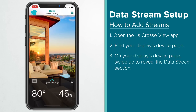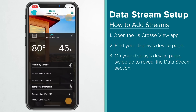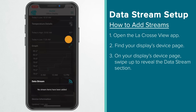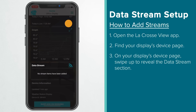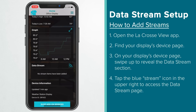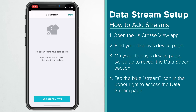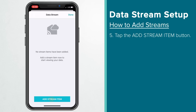Once on this display device page, swipe up to reveal additional data and, ultimately, your data stream section. Once there, tap the blue stream icon in the upper right. This will bring you to your data stream page, where you'll be able to add and edit these items. To get started, tap the Add Stream Item button at the bottom.